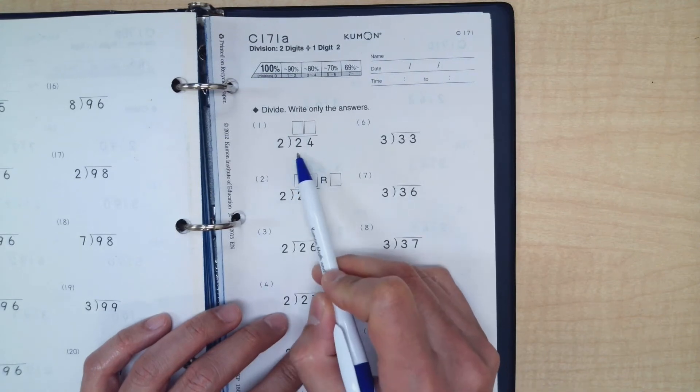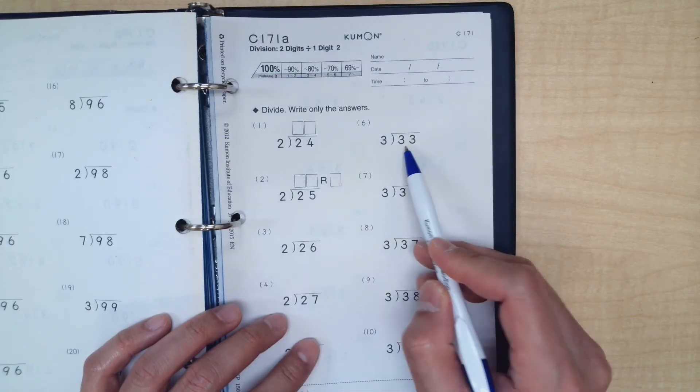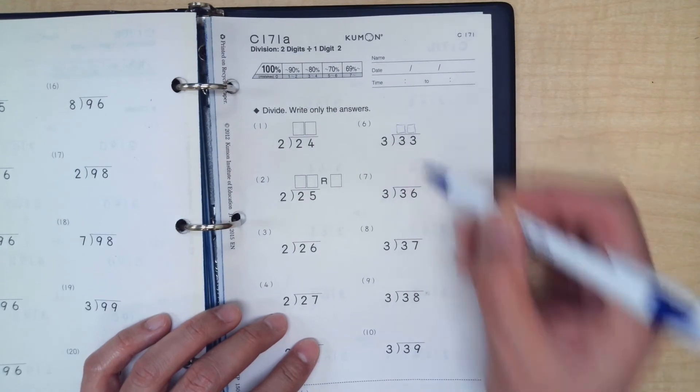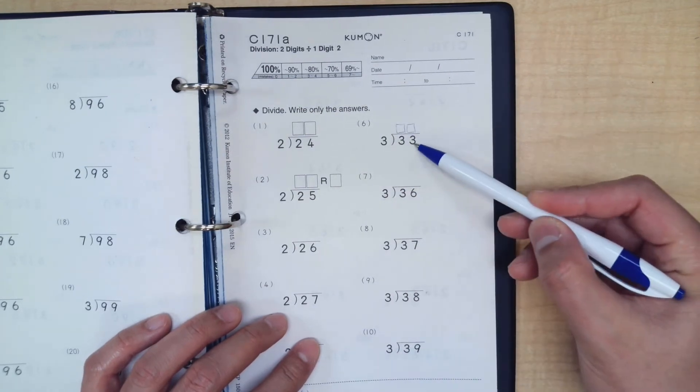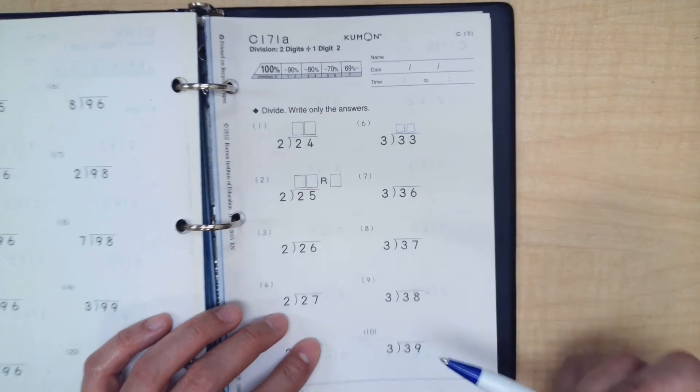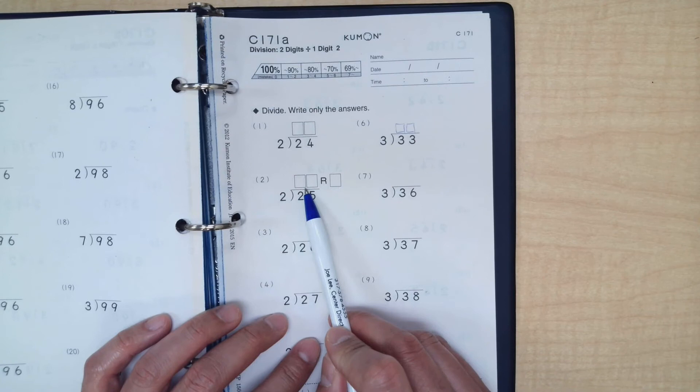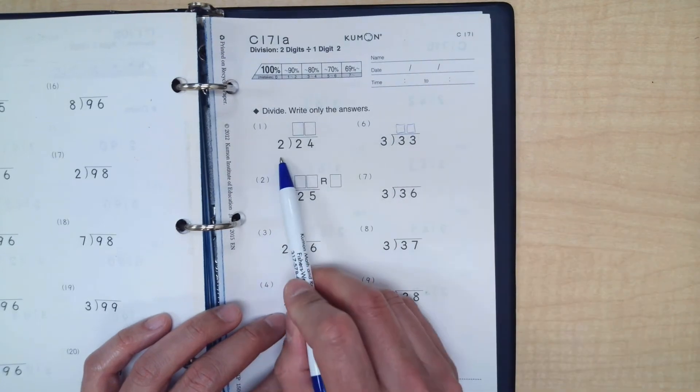Before we start, any time you see a division problem like this, I want you to imagine that there are spaces right above each one of these numbers where you could potentially put your answers down, similar to here and similar to here. Now, let's go back to number one.